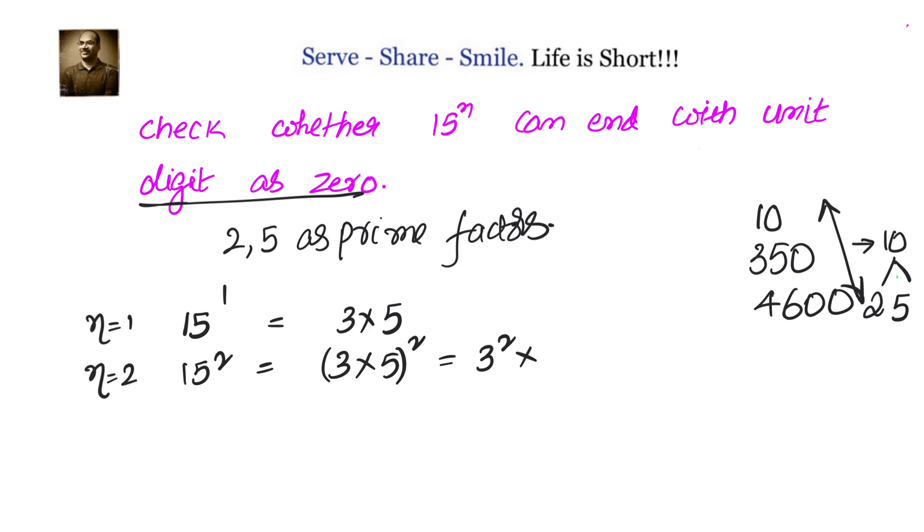If I substitute n = 3, I have 15^3 which is (3 × 5)^3, which equals 3^3 × 5^3. Now by taking different values of n, what we understand is that the prime factors remain the same but the powers are changing. So whatever may be the value of n, 15^n will have 3^n × 5^n.